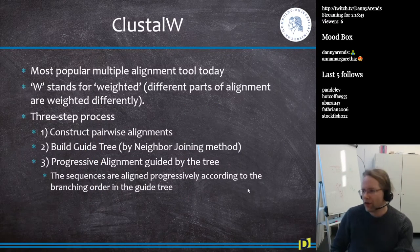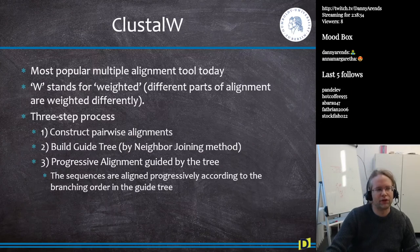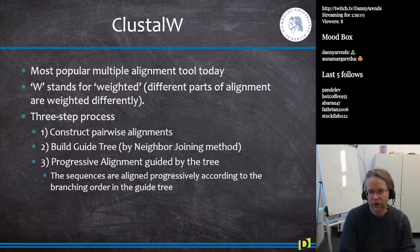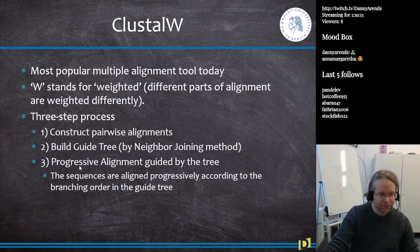ClustalW, or Clustal Omega, which is the updated algorithm, is the most popular alignment tool today. W stands for weighted — different parts of the alignment are weighted differently, because it uses the transition-transversion or the protein substitution matrix. It's a three-step process: it constructs pairwise alignments, then it builds the guide tree using neighbor joining, and then it does progressive alignment guided by the tree. Sequences are aligned progressively according to the branching order in the guide tree.